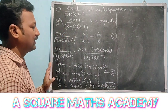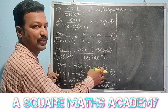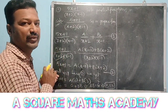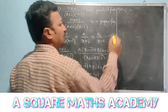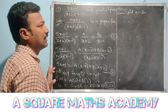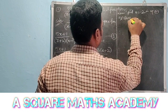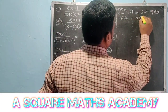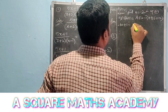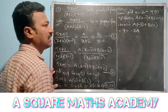To find A, set the factor x plus 2 equal to zero, giving x equals minus 2. Substituting x equals minus 2 in equation 2: 5(minus 2) plus 1 equals A(minus 2 minus 1) plus B(minus 2 plus 2), which gives minus 10 plus 1 equals A(minus 3) plus B(0), so minus 9 equals minus 3A, therefore A equals 3.